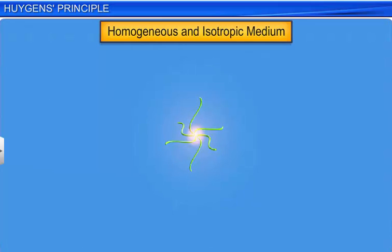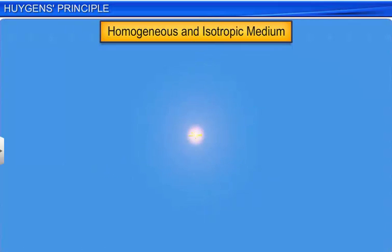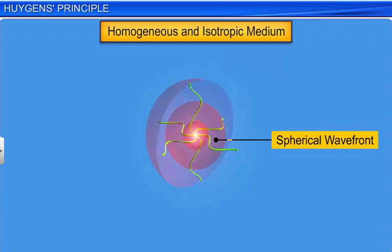If the medium is homogeneous, the speed of light waves is the same throughout the medium, and if it is isotropic, it is the same in all directions. The loci of all points which have the same amplitude and vibrate in the same phase forms a sphere with its center at the source of light. Hence, a spherical wave front is generated when a point light source is placed in a homogeneous medium.